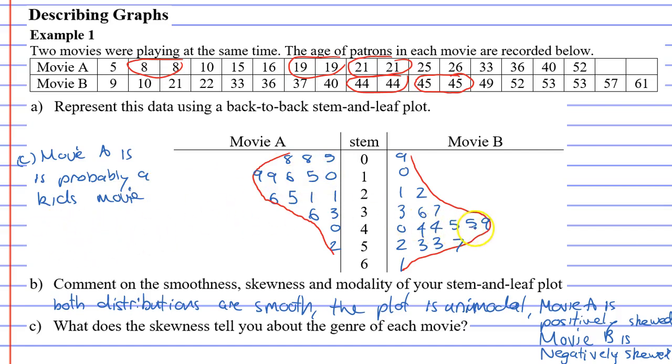Movie B has more of the data grouped for the older age group, hence being negatively skewed. We'll say movie B is probably an adult movie. Some nine-year-old kid and a ten-year-old kid somehow snuck in, but it's probably an adult movie.